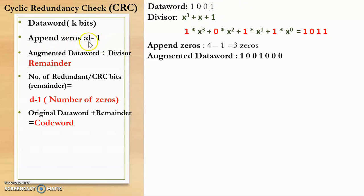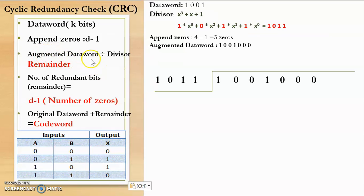The first step is to append d-1 zeros to the data word, where d is the number of bits in the divisor. Here the divisor is 4 bits, so we append 4-1 = 3 zeros to the data word 1001. After appending 3 zeros we get the augmented data word 1001000. Next, we divide the augmented data word by the divisor using XOR operation: when bits are the same (0,0 or 1,1) the output is 0; when they are different (0,1 or 1,0) the output is 1.